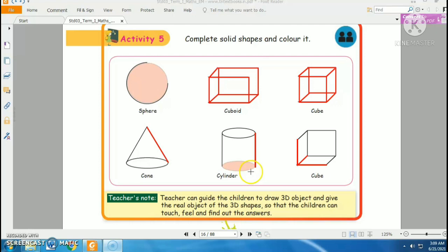That's all, your cylinder is ready. There is another cube for you. Just draw one line here, one line here, and one line here, so your cube will be ready.